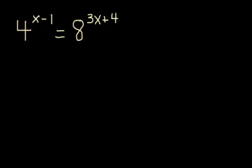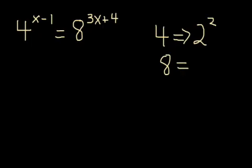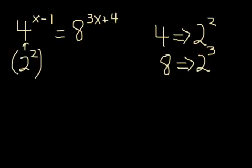In this problem the bases are different. One is 4, one is 8. But the first thing I notice is that both 4 and 8 are multiples of 2. I can rewrite 4 by saying that's 2 to the second power, and I can rewrite 8 as 2 to the third power. So I'm going to take advantage of that and use that to solve this problem. I'm going to simply go over here to the left and where 4 appears, I'm going to write 2 squared. Now notice it's still raised to the x minus 1 power, so I don't want to lose that, and I'm going to put that in parenthesis so I don't forget to distribute it in a minute.